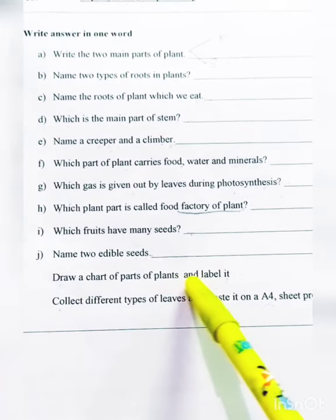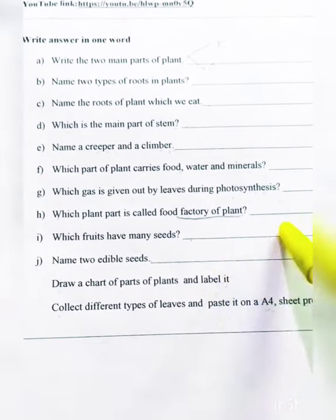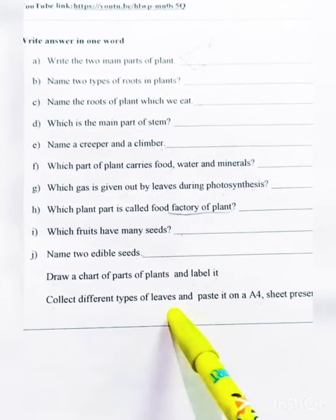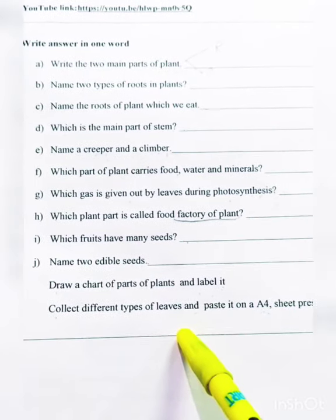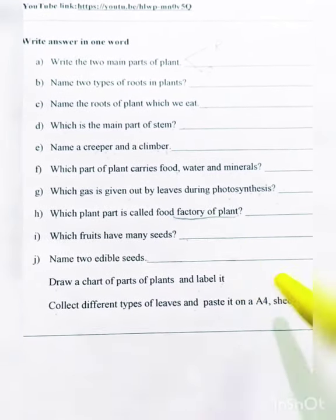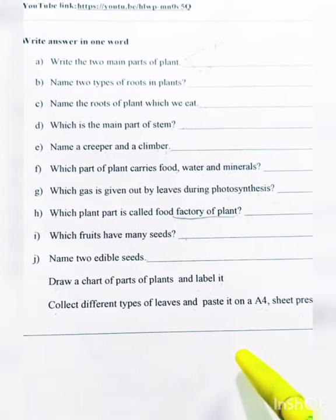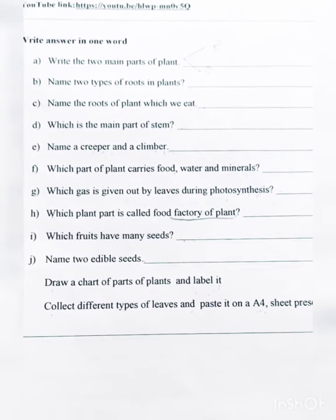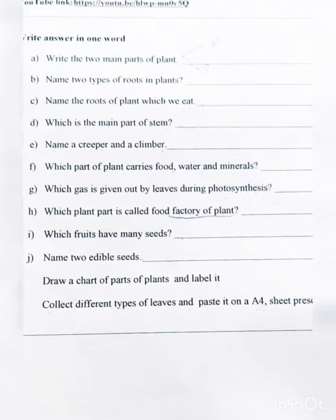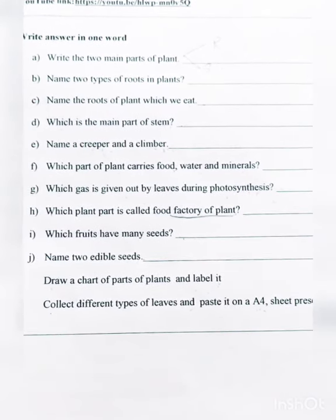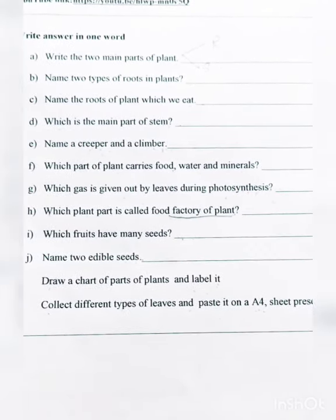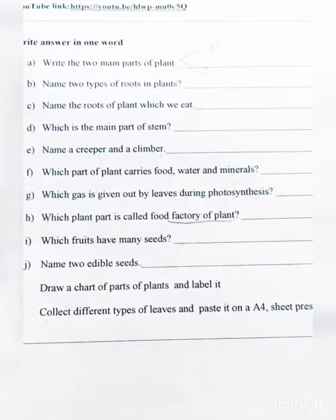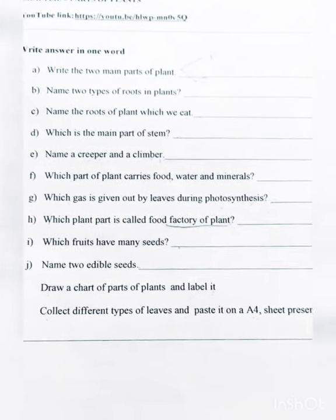Draw a chart paper of the parts of a plant and label it. You have to draw a plant showing the stem, branches, and leaves, and label all parts. Also, collect different types of leaves and paste them on an A4 sheet. If you get colorful leaves, that is even better — you can paste different leaves of different colors.